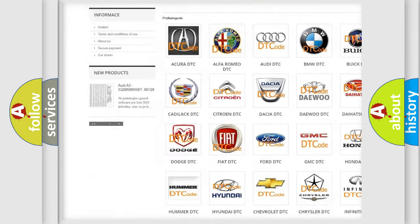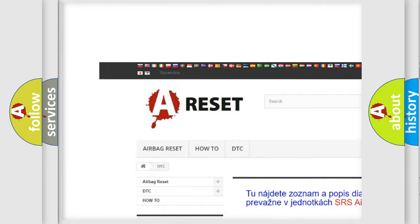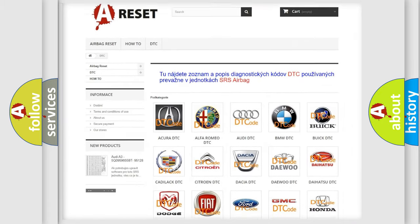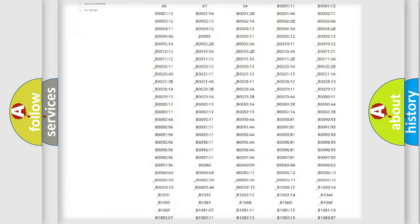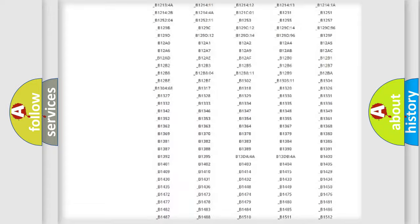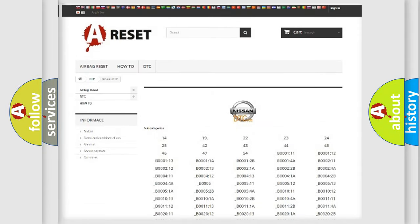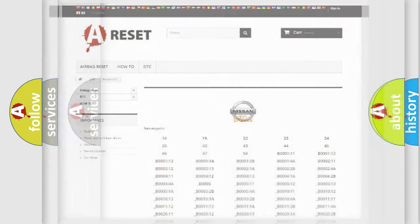Our website airbagreset.sk produces useful videos for you. You do not have to go through the OBD2 protocol anymore to know how to troubleshoot any car breakdown. You will find all the diagnostic codes that can be diagnosed in Nissan vehicles, and many other useful things.